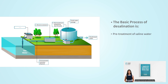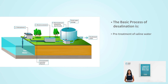During the pre-treatment process, different series and types of filters are used to filter suspended particles. The water is then pumped into the membranes through high pressure pumps. From the membrane assembly, brine and desalinated water are discharged.